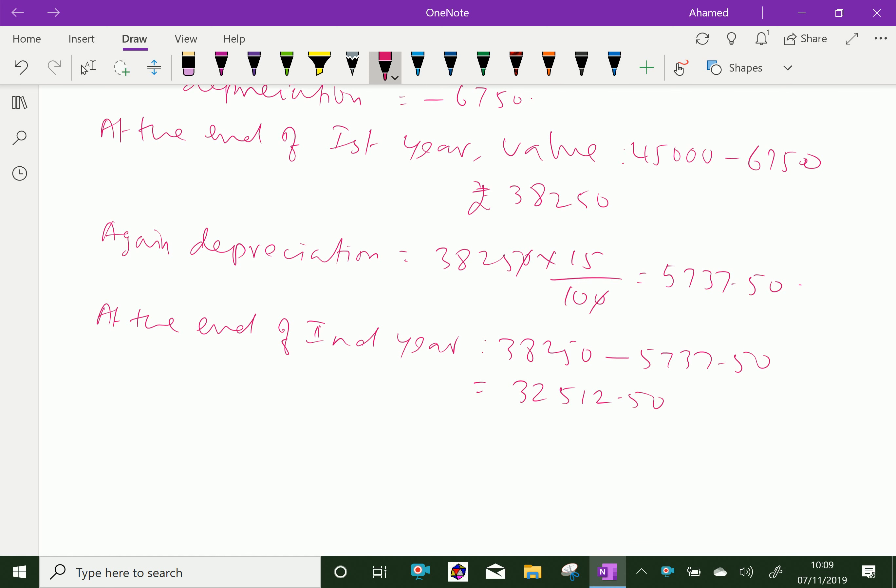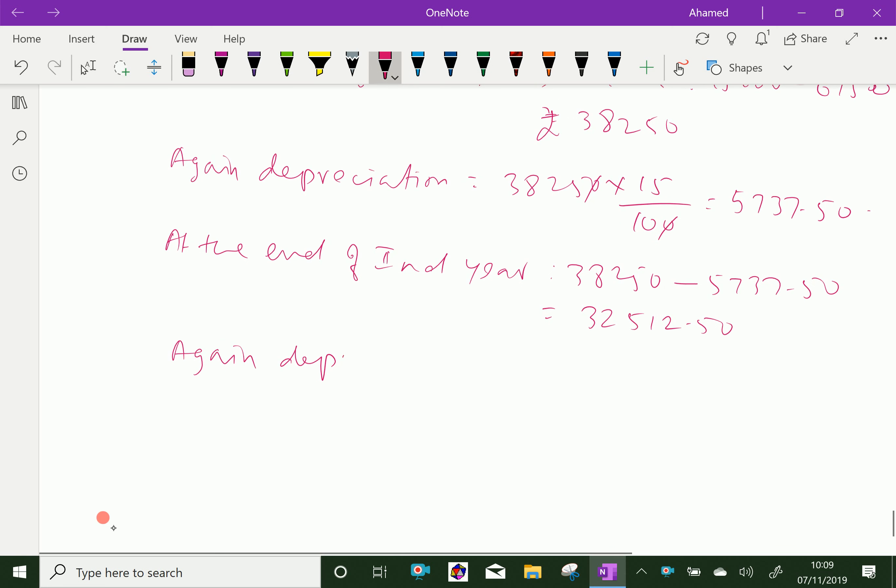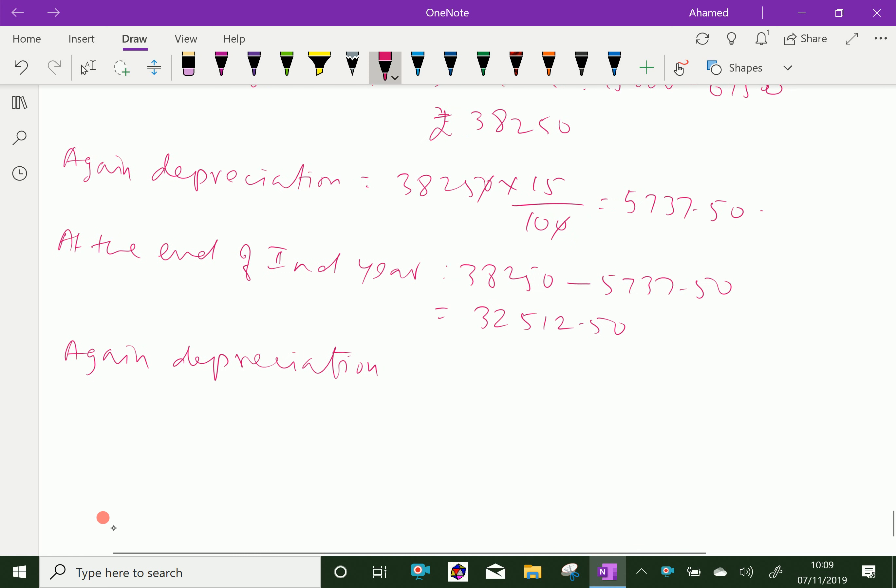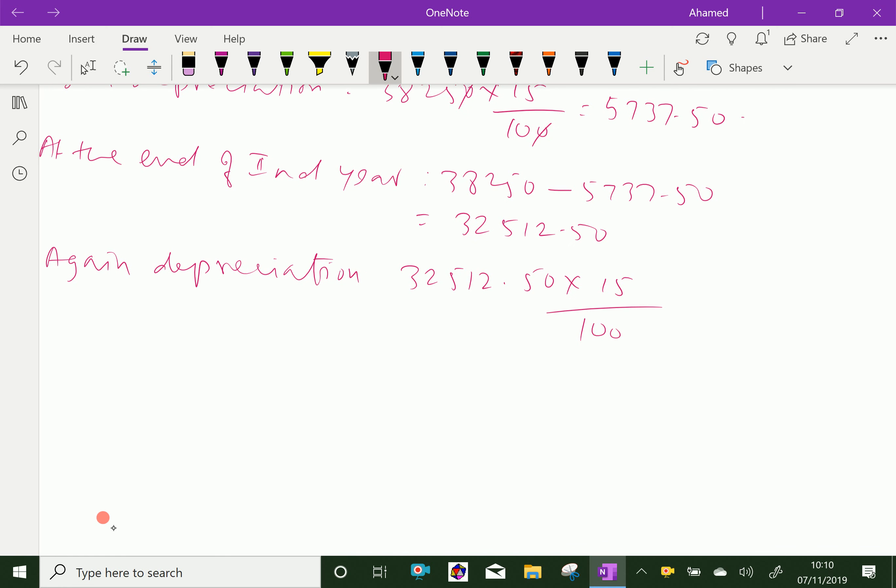Again depreciation for the third year. This amount, 32,512.50 times 15/100. By using a calculator, you can find this value gives ₹4,876.88.